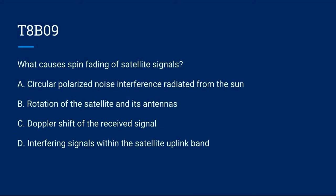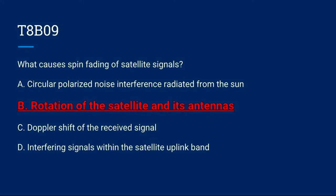T8B09: What causes spin fading of satellite signals? A. Circular polarized noise interference radiated from the sun. B. Rotation of the satellite and its antennas. C. Doppler shift of the received signal. Or D. Interfering signals within the satellite uplink band. The correct answer is B: rotation of the satellite and its antennas.